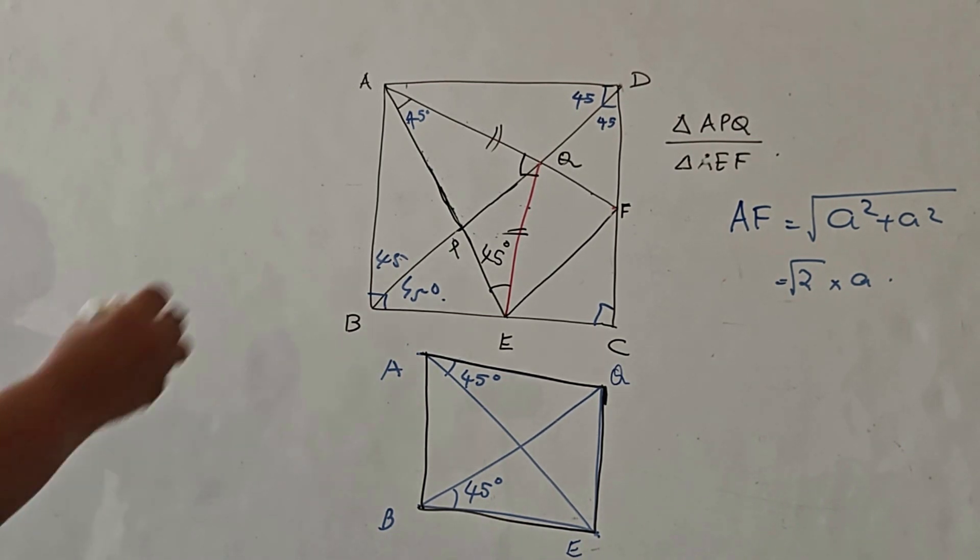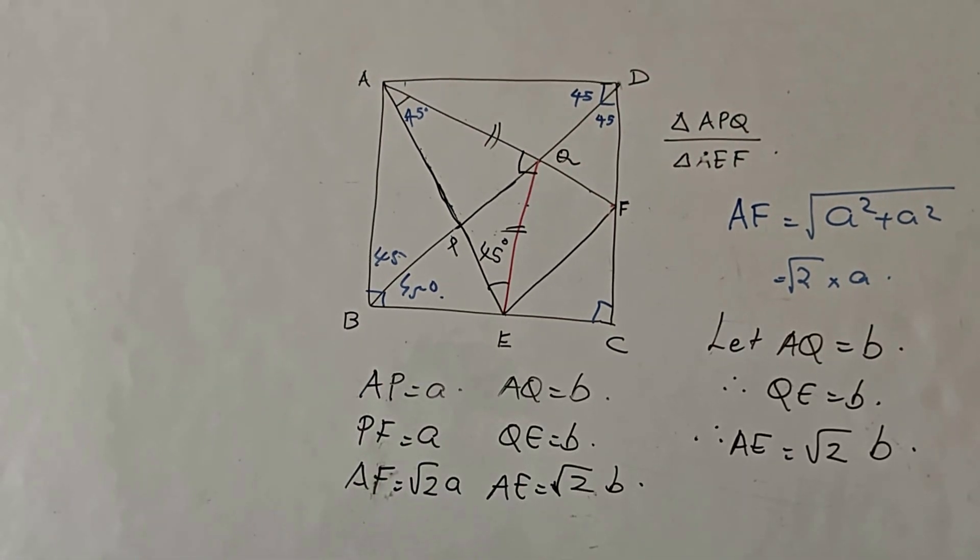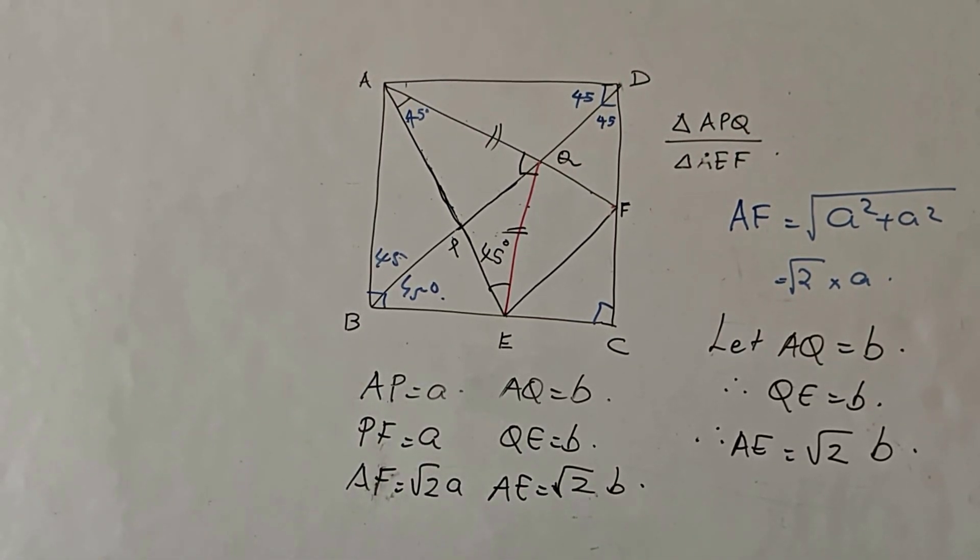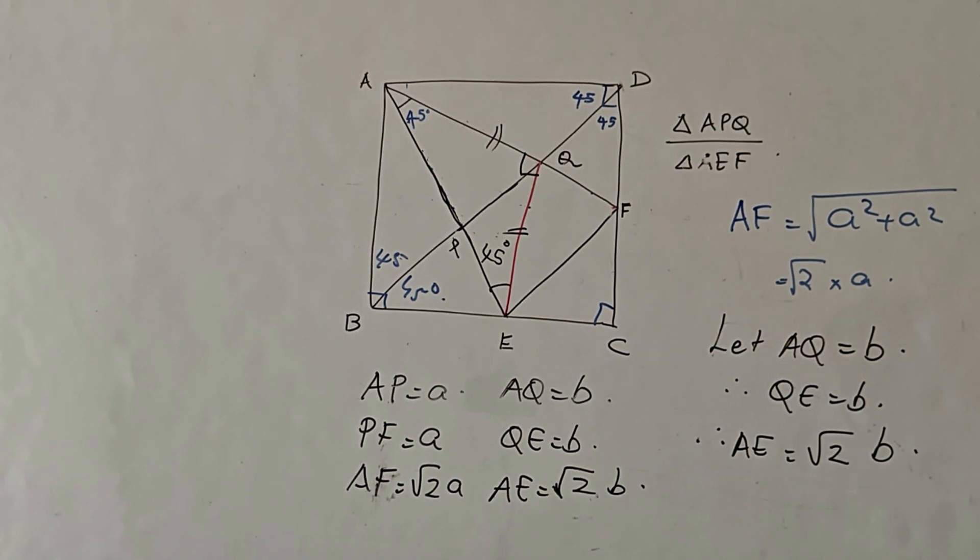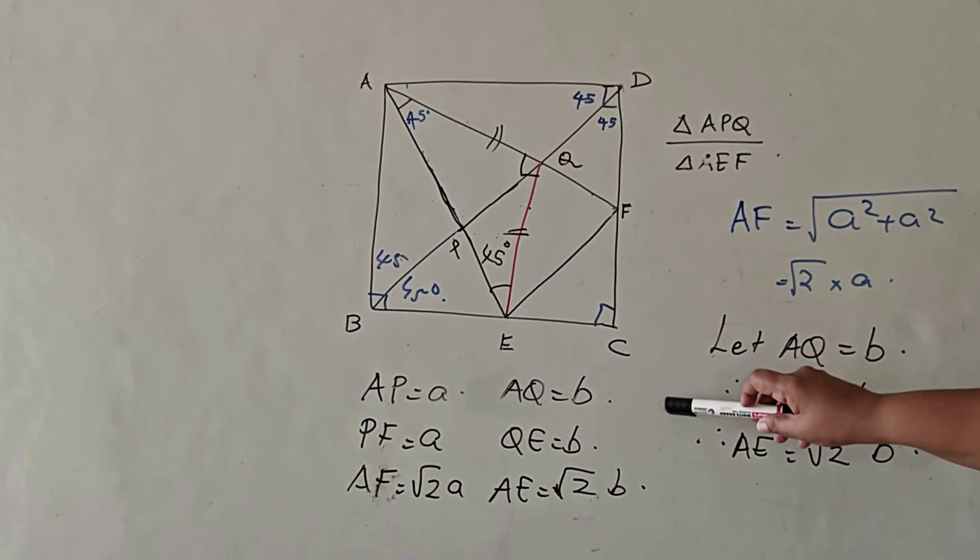Now we can take the measurement of AE by using the Pythagoras theorem. You can see how I have found the measurement of AE to be root 2 B by using the Pythagoras theorem, just like I found the measurement of AF using Pythagoras theorem. So all the known measurements I have written over here.